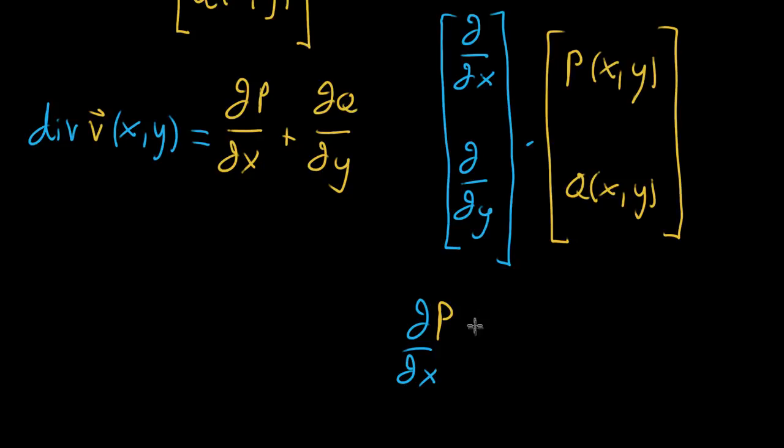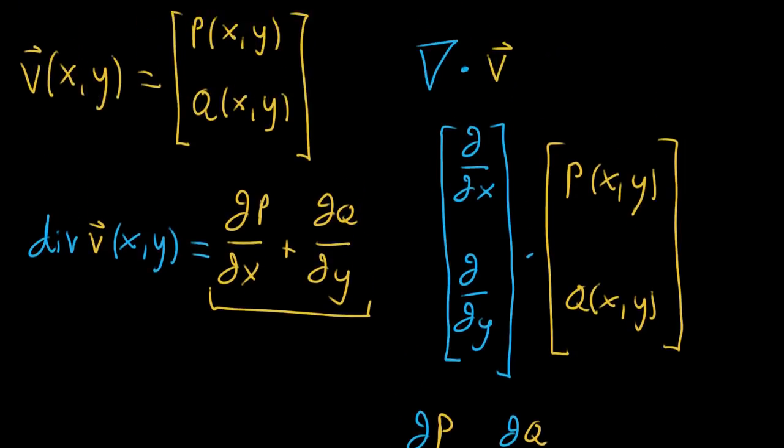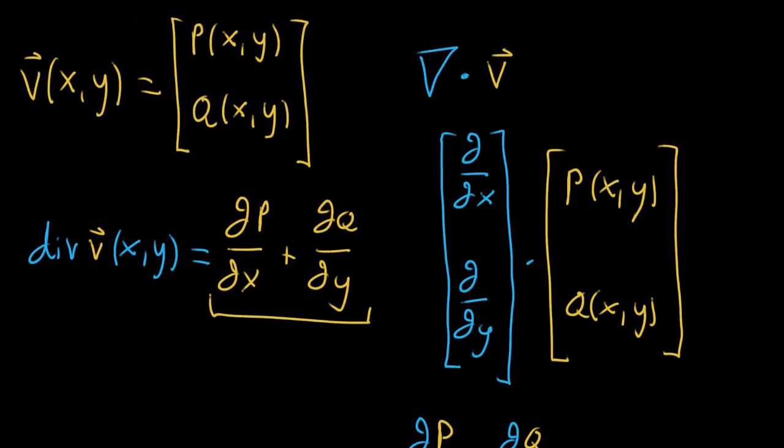So you take that, and as per the dot product, you then add what happens if you take this partial operator, this ∂/∂y, and quote unquote multiply it with q, which in the case of an operator means you kind of give it the function q, and it's gonna take its partial derivative. So we see, we get the same thing over here. It's the same formula that we have. And it's just kind of a nice little mnemonic device for remembering what the divergence is.